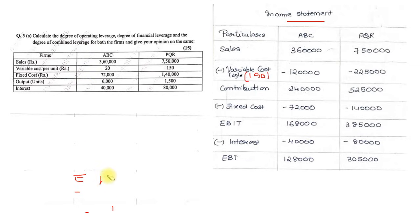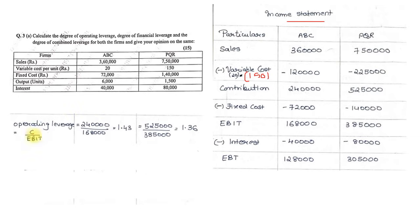Now we apply the leverage formulas. The Operating Leverage formula is Contribution divided by EBIT. For ABC: 2,40,000 / 1,68,000 = 1.43. For PQR: 5,25,000 / 3,85,000 = 1.36.